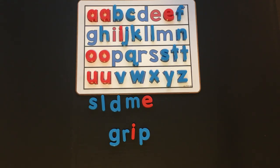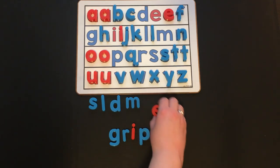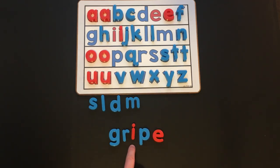And for our last word, we're going to change grip into gripe. Gripe. What do we need to do to change grip into gripe? That's right. I need to add silent E to make the I say I. GR-IP, gripe.